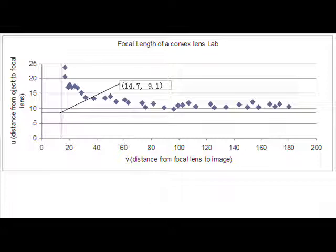Once you have your graph, input horizontal and vertical asymptotes where appropriate. The intersection of the asymptotes on the graph is the focal length of our convex lens, which according to our graph was at the point 14.7, 9.1.